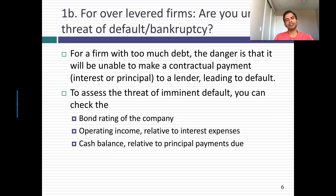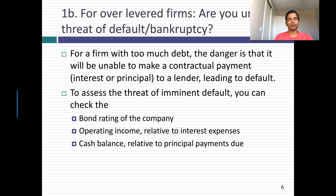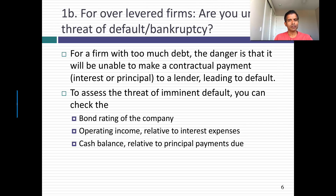If you're an over-levered company the question of urgency is different. I'm not worried about being acquired — I'm worried about default or bankruptcy. I might not be able to make my next interest payment or my next principal payment. So the question is: am I under threat of bankruptcy? To answer this, look at three things. First, if your company has a bond rating, look at it — if you're rated CCC or CAA, you've got to do something fast; this is an urgent problem. Second, look at how comfortably you make your interest expenses: what's your operating income versus your interest expense. Third, look at how much cash you have relative to the debt payments coming due. Use the common sense any banker uses when assessing default risk.